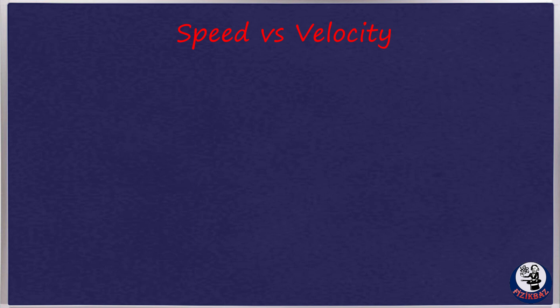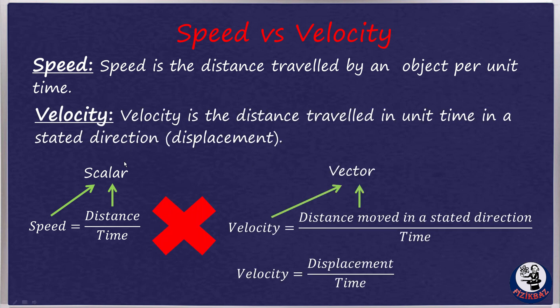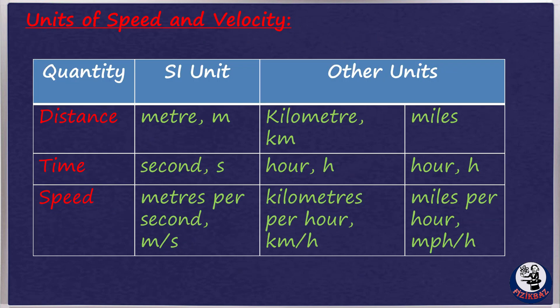Now let's compare speed and velocity. The main difference is that speed is a scalar quantity and velocity is a vector quantity. Speed is the distance traveled by an object per unit time, and distance is a scalar quantity, so speed is scalar too. But when we calculate velocity, we use displacement, not distance. Displacement is a distance moved in a stated direction — it is a vector quantity, so velocity is a vector quantity too. In SI units, the unit of speed is meters per second, though in practice kilometers per hour and miles per hour are also used. This is also true for velocity.